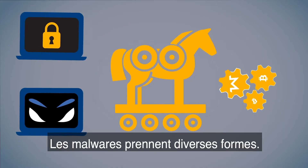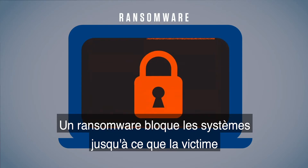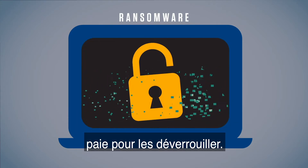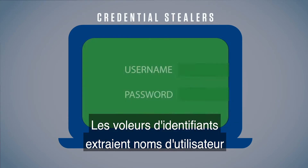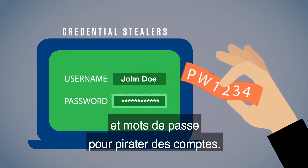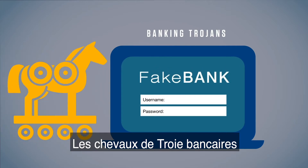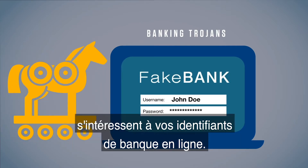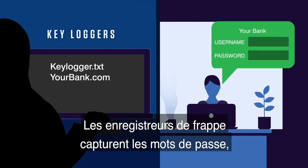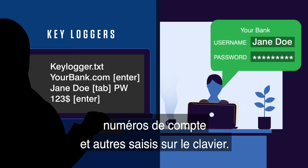Malware comes in many forms. Ransomware locks infected systems until the victim pays a ransom to unlock it. Credential stealers are used to get usernames and passwords for email and other accounts. Banking Trojans are more specific, targeting your banking usernames and passwords. Keyloggers can record your keystrokes to get passwords, account numbers, and more.